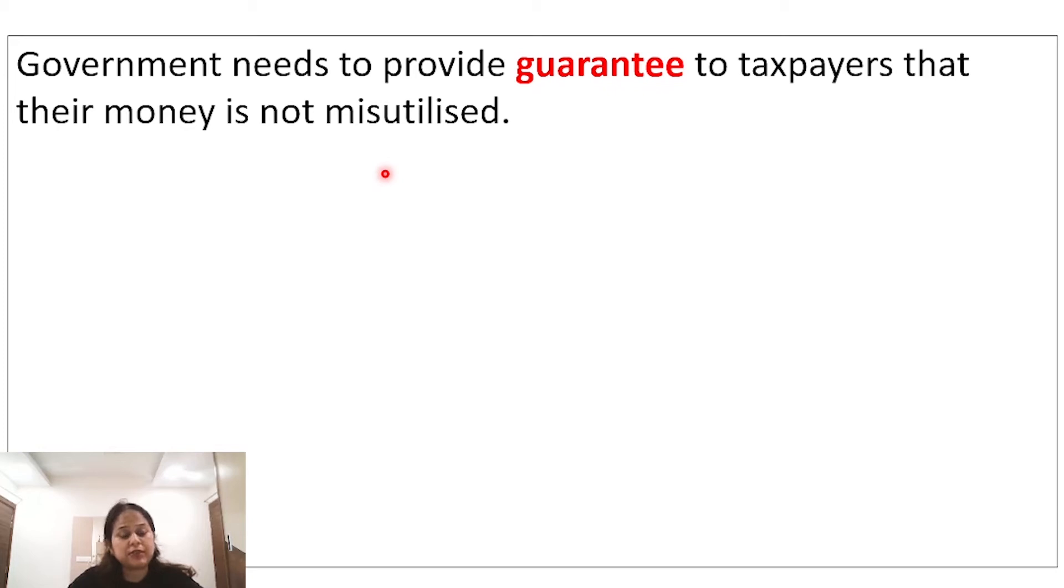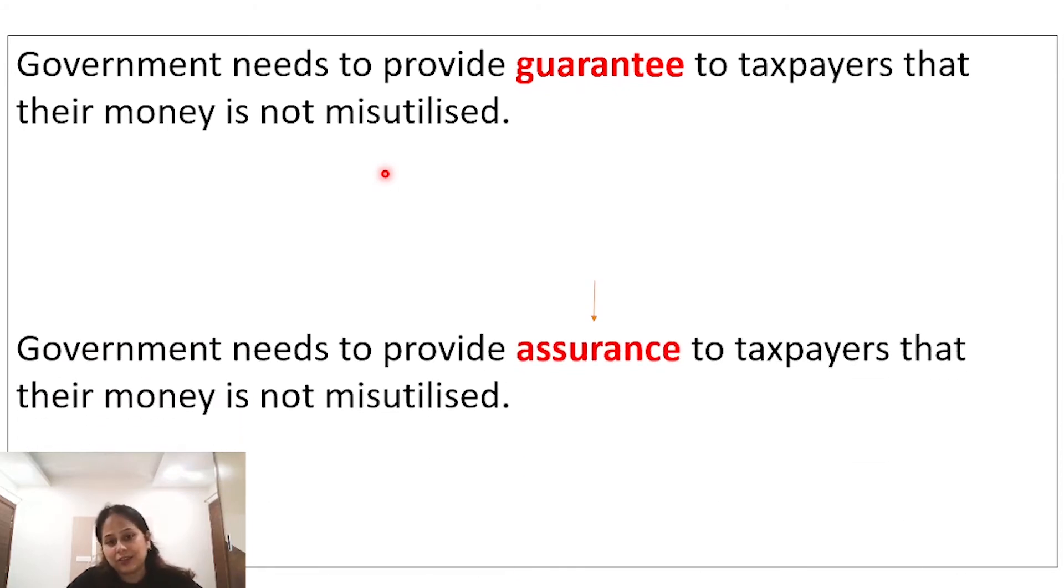Government needs to provide guarantee to taxpayers that their money is not misutilized. Government ko guarantee deni padegi ki unka paisa misutilized nahi hota. Guarantee ki jagah you can use the word assurance.